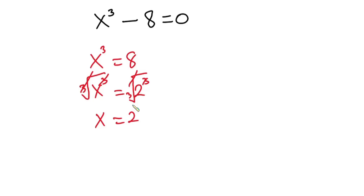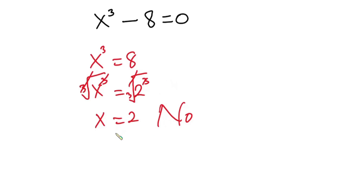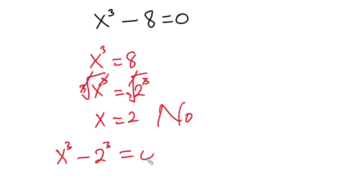But is this the only solution to this problem? The answer is no — we have some other solutions. So in this video we will figure out all the solutions. I will write this equation as x to the third power minus 2 to the third power is equal to 0.